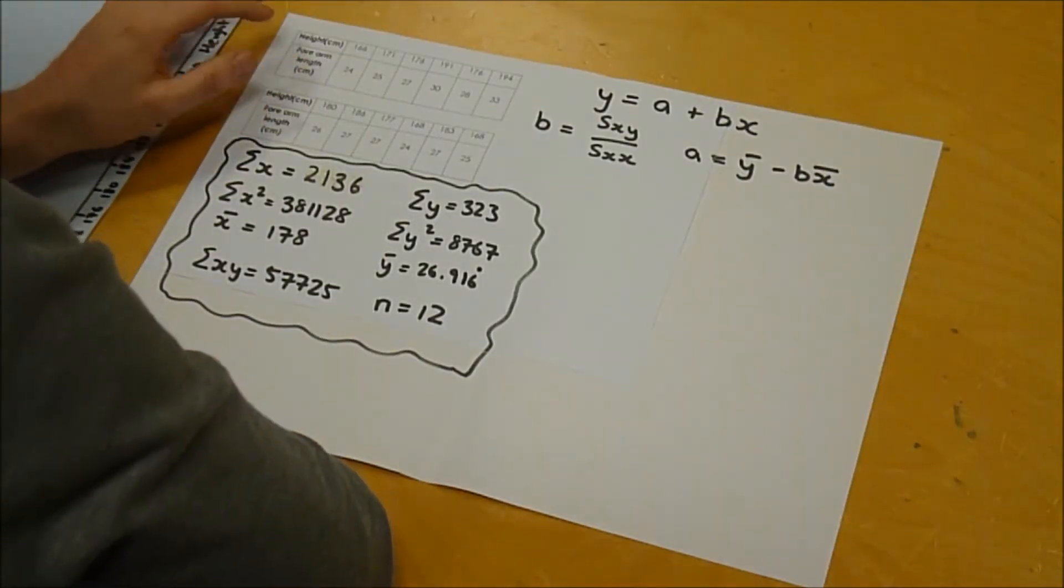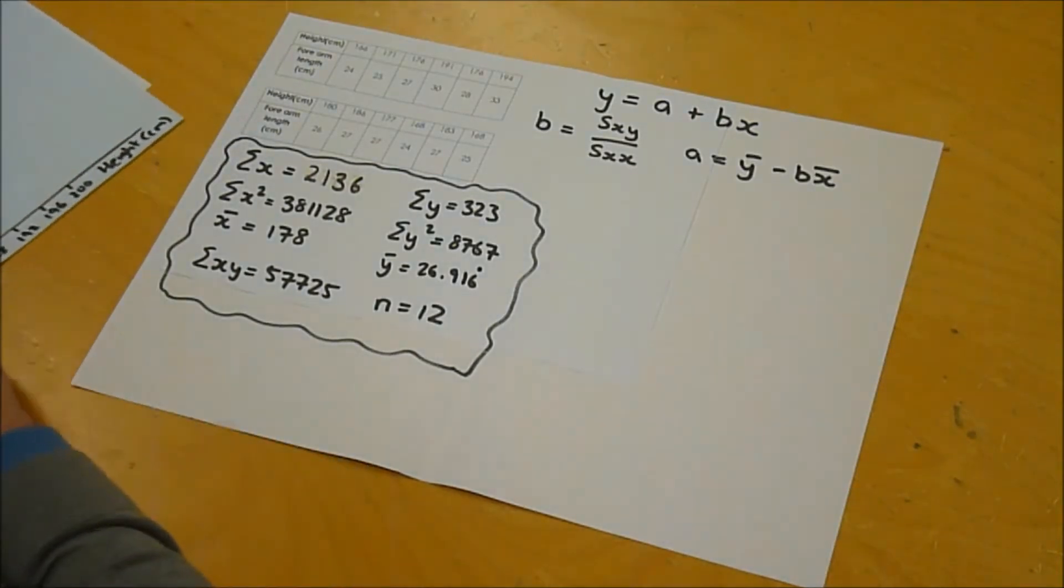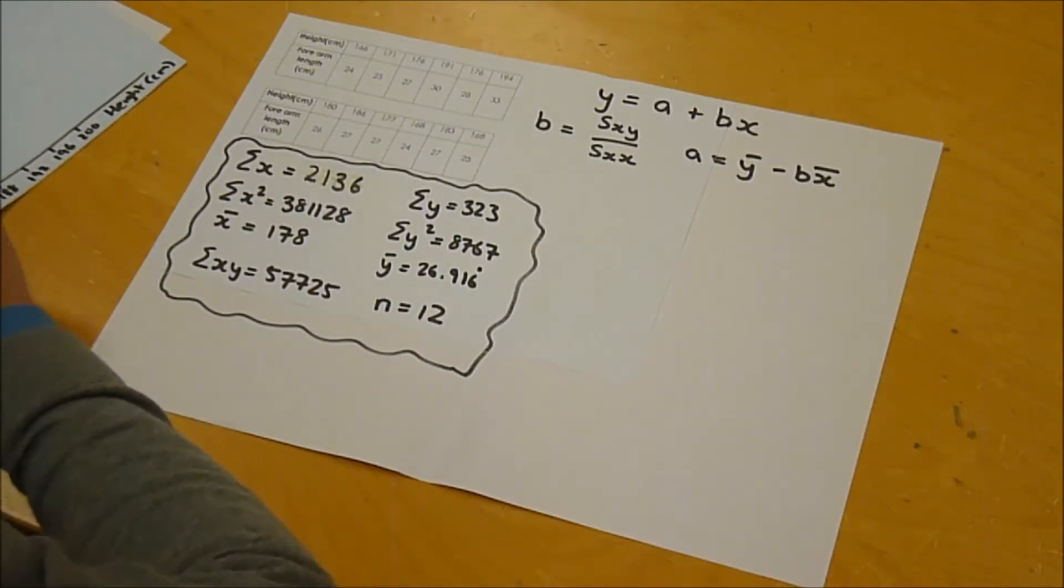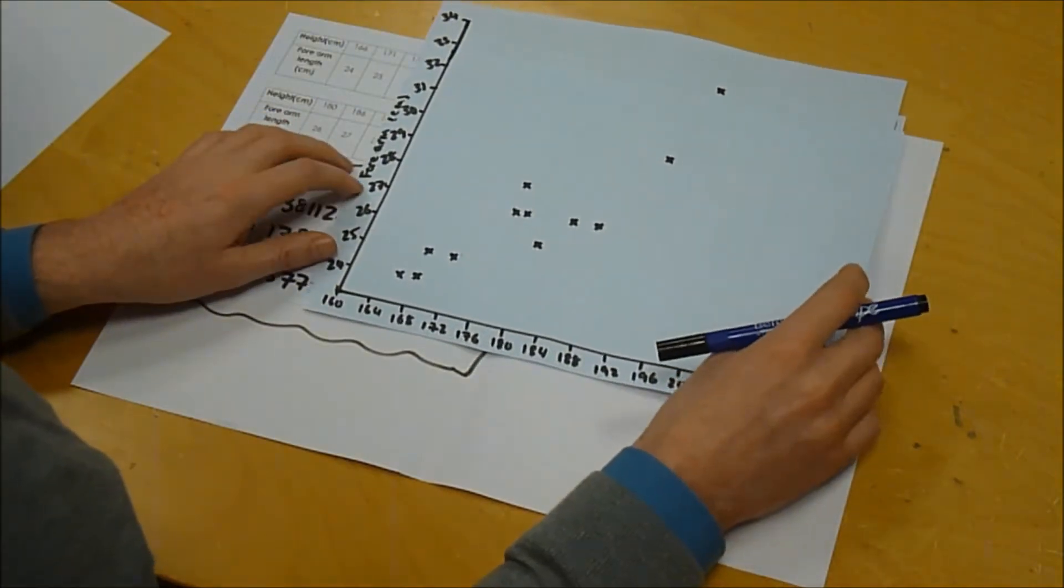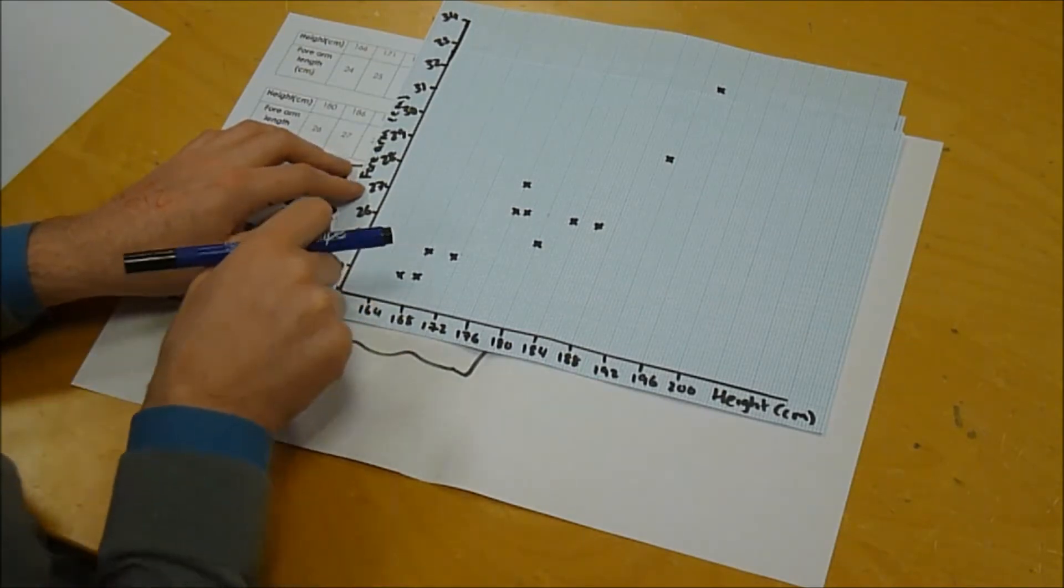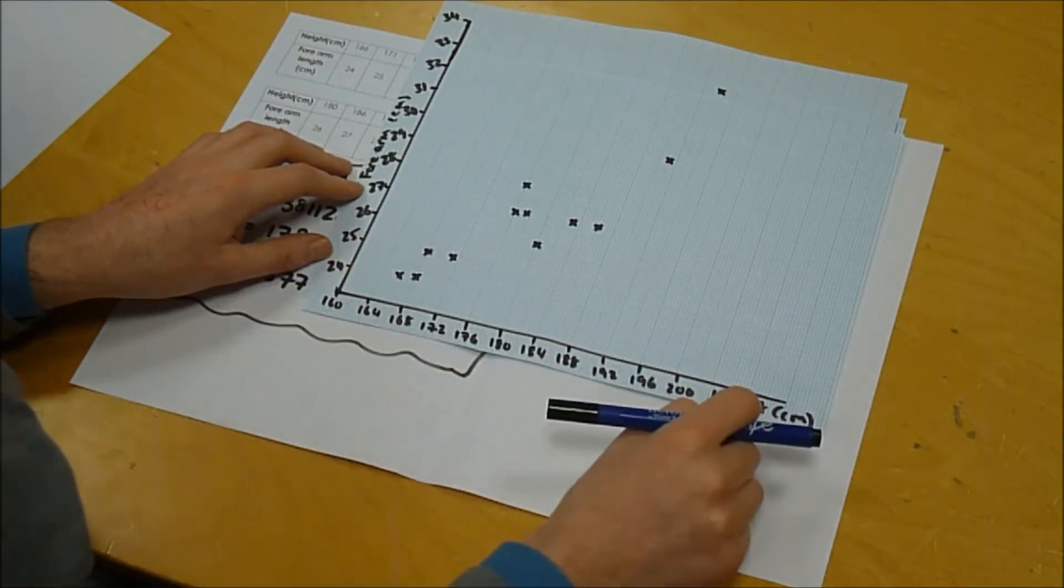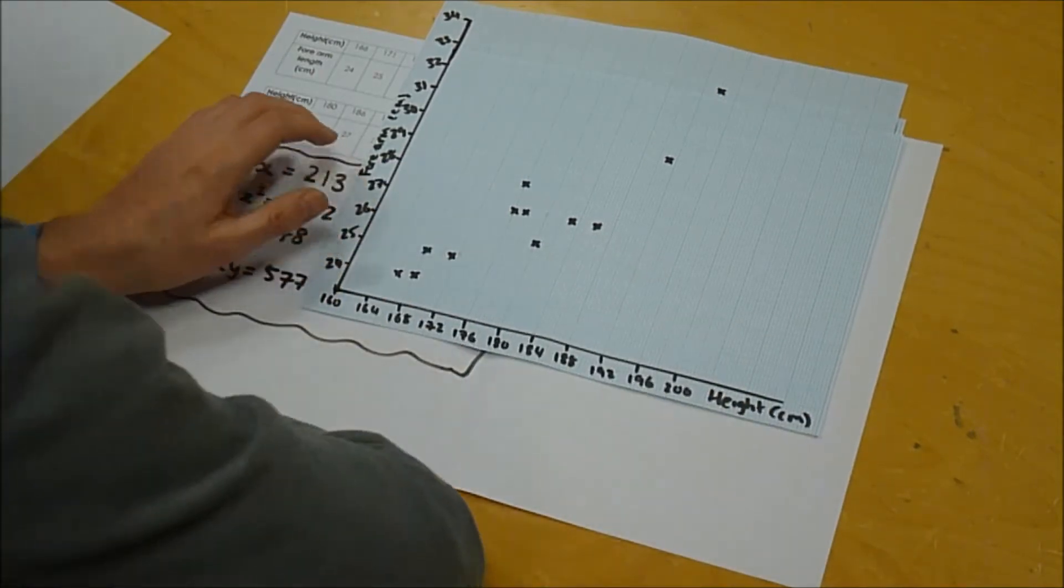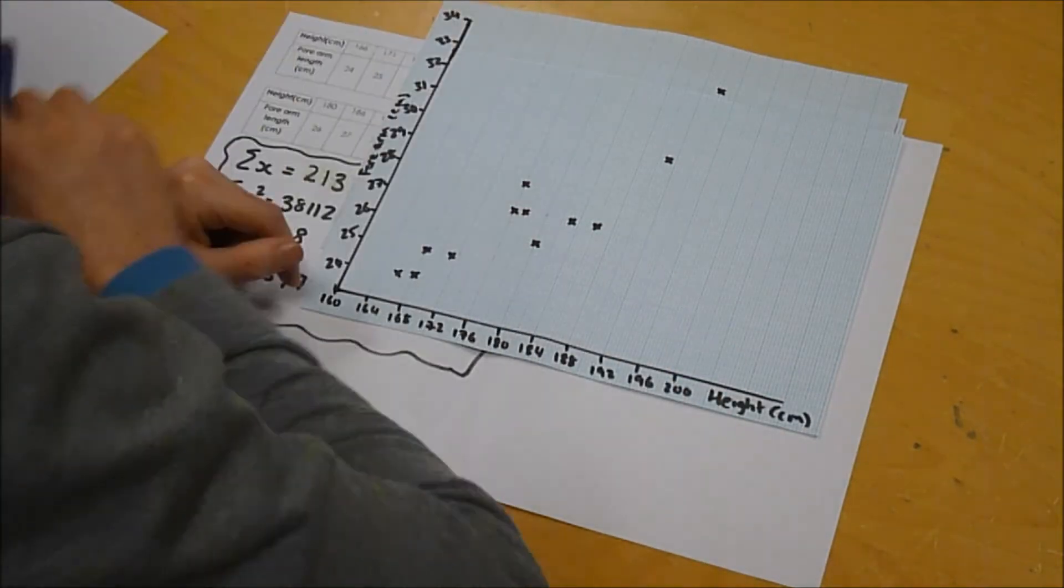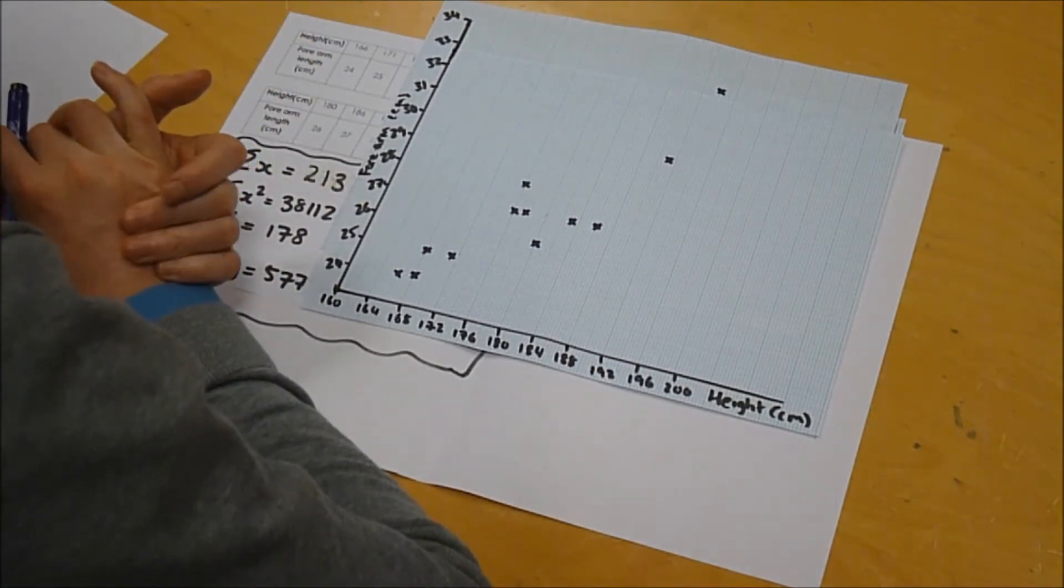Right, so we've got the data on your note sheet for teachers' height against their forearm length. So what you should do on your note sheet is plot a scatter graph. Now I've done an example. I've made my scale go from 160 to 200 for the height and 24 to 34 for the forearm length. In this particular example it's not obvious which is the dependent and which is the independent variable, but I've decided to put height on the x-axis. So you should pause the video and have a go at doing your scatter graph.